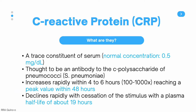Let's now go into more detail about C-reactive protein, otherwise known as CRP. It is a trace constituent of serum with a normal concentration of 0.5 mg per deciliter or 5 mg per liter. It is called C-reactive protein because scientists in the 1930s thought it was an antibody to the C-polysaccharide of pneumococci or Streptococcus pneumoniae. We still use this name today even though we now know it is an acute phase reactant, not an antibody.